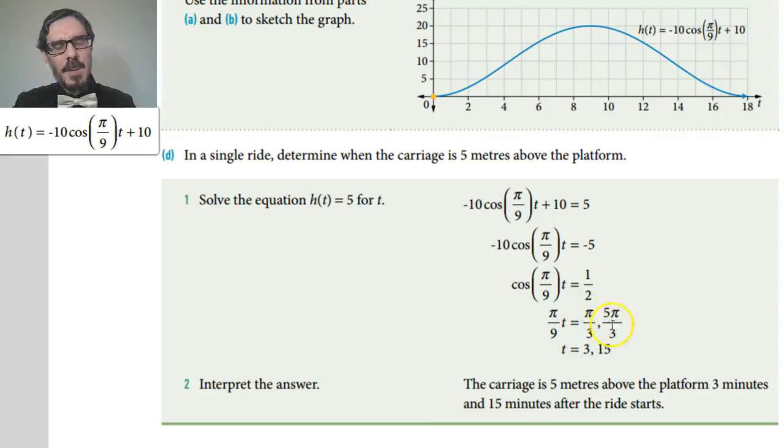I'm going very quickly through that because we've just done lots of examples of that. If that's true and that's π/9 t, then I have to multiply these by 9/π, which will give me 3 minutes and 15 minutes. So in fact in this graph it was exactly 3 minutes and exactly 15 minutes.